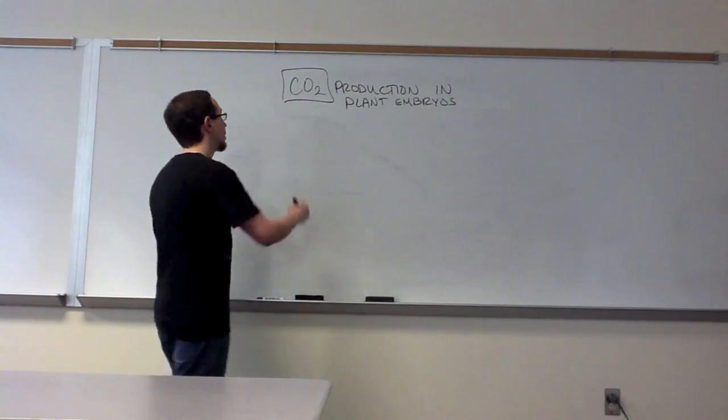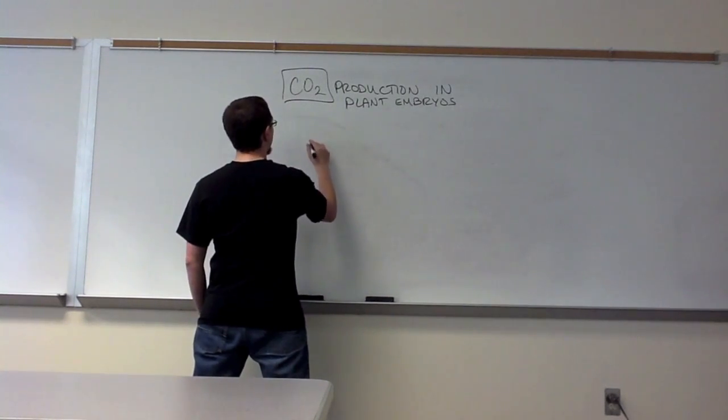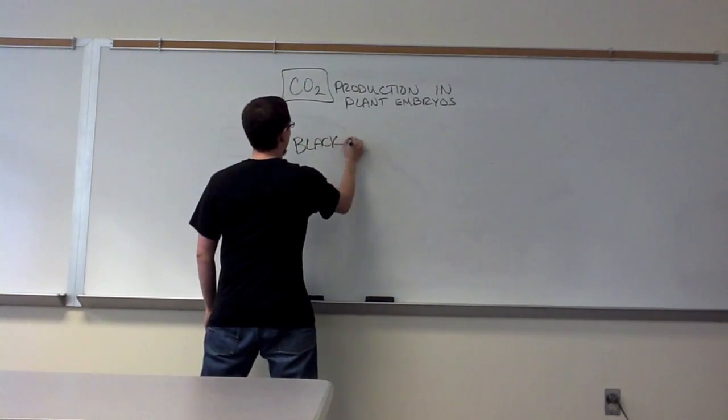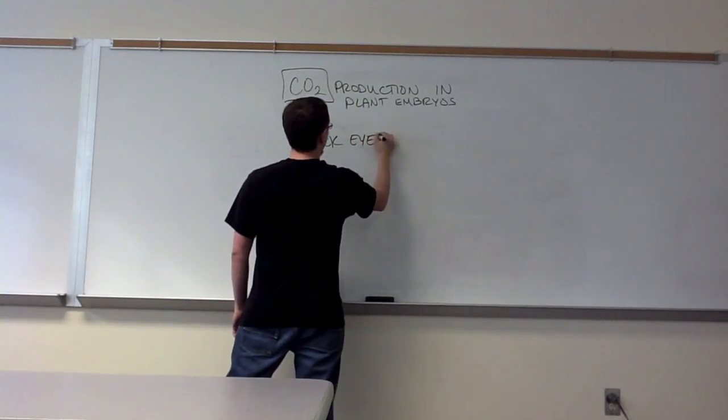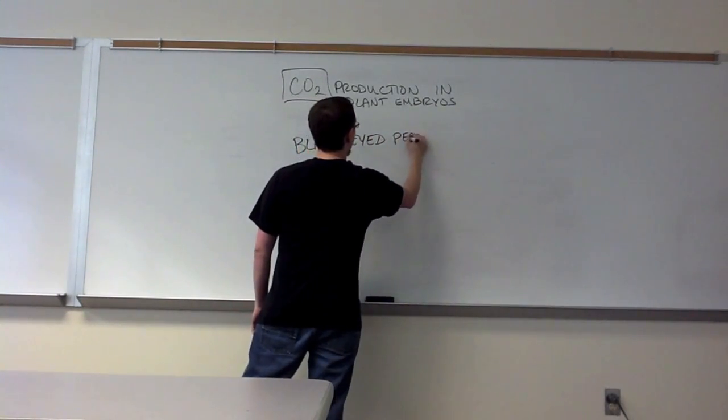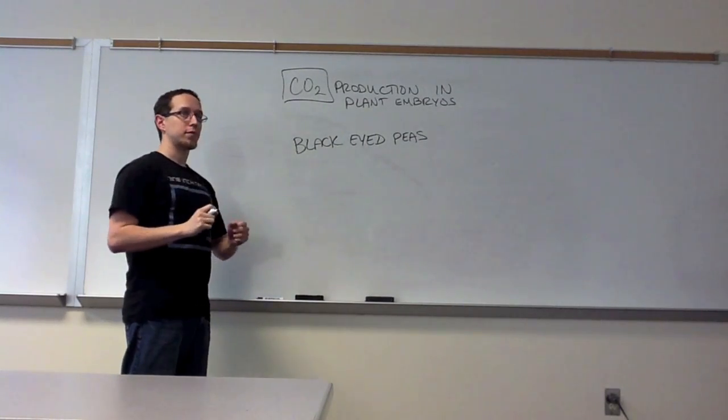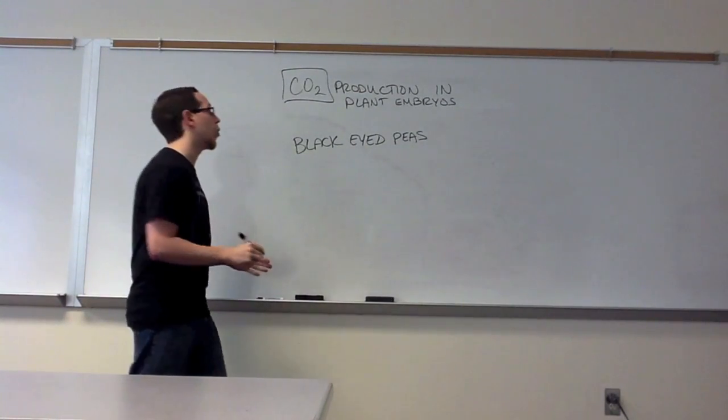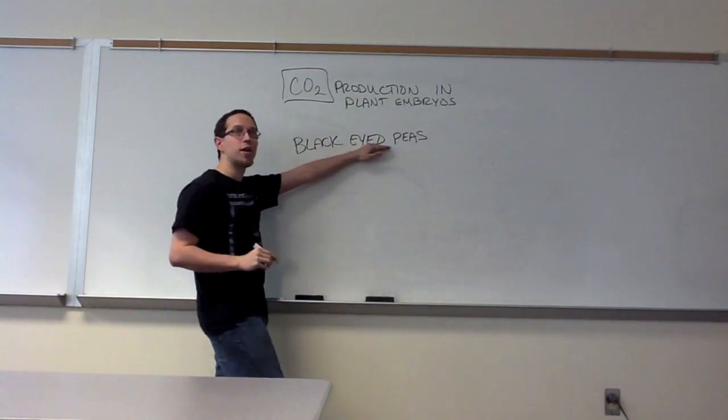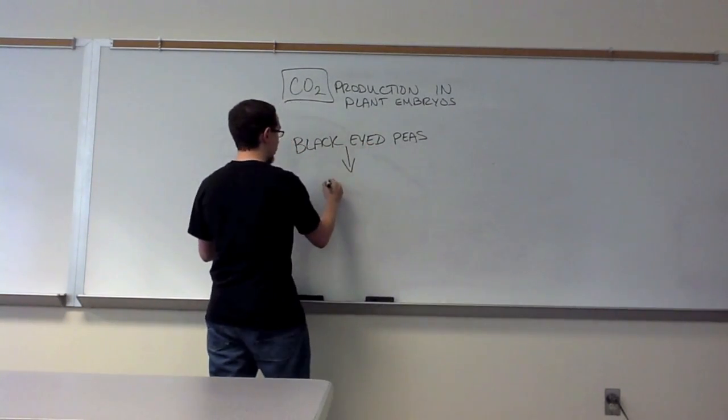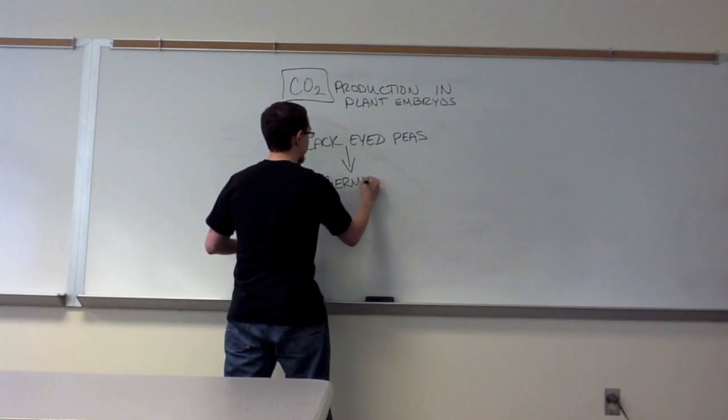We're going to take two sets of black-eyed peas. We bought these in a grocery store, they were in a bag, they were dry. We opened the bag and put them into water. These peas that we bought in that bag are technically dormant, but when we put them into the water, they enter a state that's known as germination.